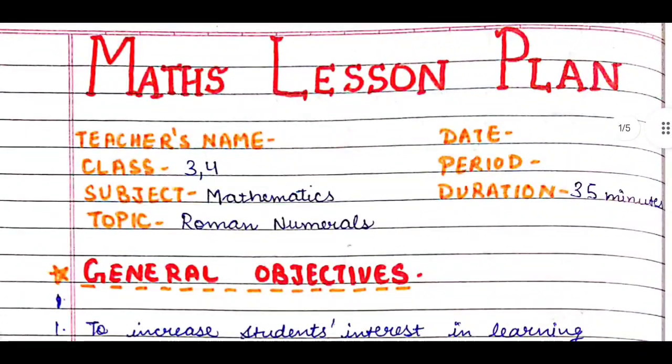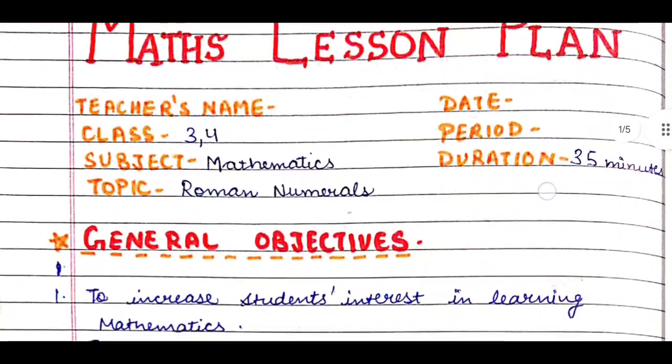In the starting, we write the details like teacher's name—you write your name. Then we write which class you are teaching to, third or fourth, you can use it for either. Then we write the subject: Mathematics. I have made this lesson plan on Roman numerals, so we write the heading Roman numerals. Then we write the date, the period in which we are teaching, and then the duration—it means how much time you are going to take to teach this lesson. So it will take approximately 35 minutes because it's not such a big topic.